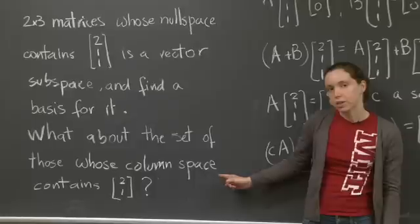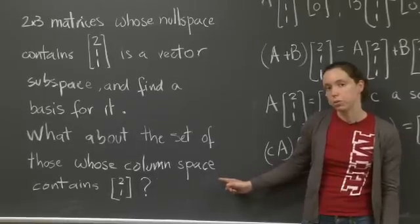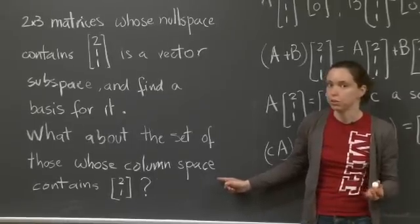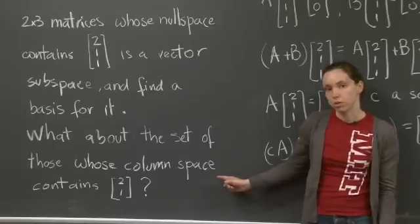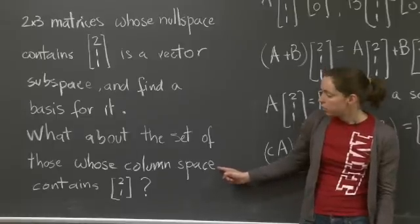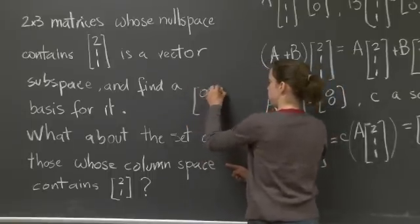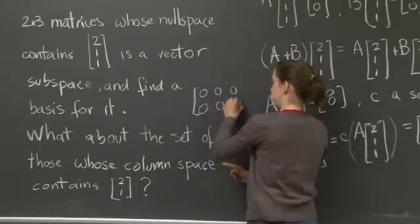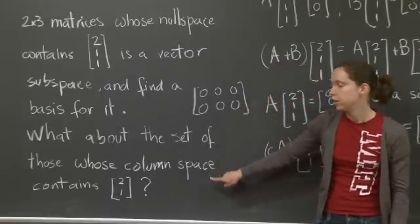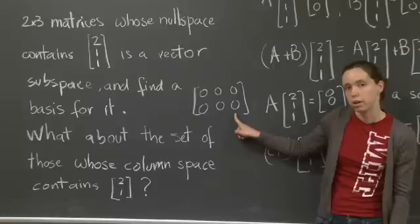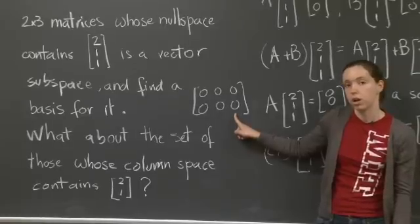Well, one quick check that you can always do is check that the 0 vector, in this case the 0 matrix belongs to the set. Does the 0, 2 by 3 matrix, 0, 0, 0, 0, 0, 0, does this matrix belong to this set? Does this matrix contain the vector 2, 1 in its column space? It does not.